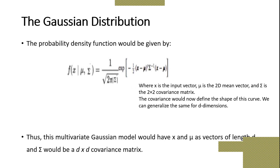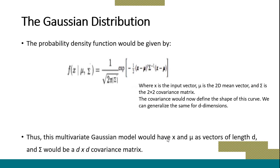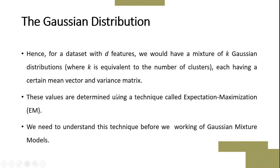This multivariate Gaussian model will have x and mu as vectors of length d and sigma will be the d-by-d covariance matrix. For a dataset with d features, we will have a mixture of K Gaussian distributions, each having a certain mean vector and variance. These values are determined using the technique called Expectation Maximization, or EM.